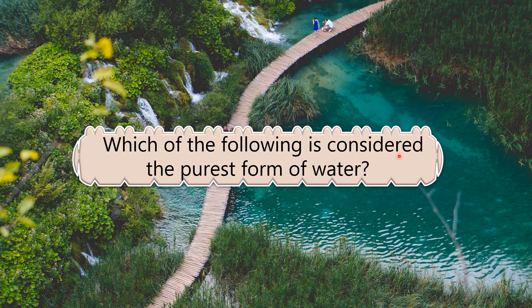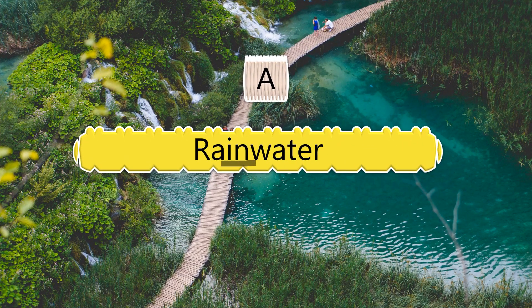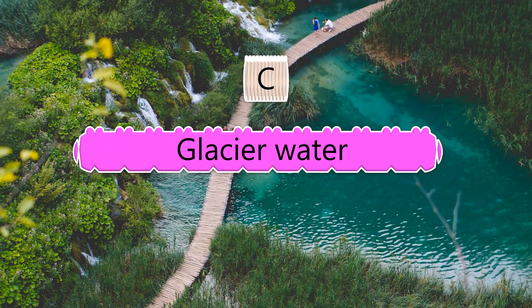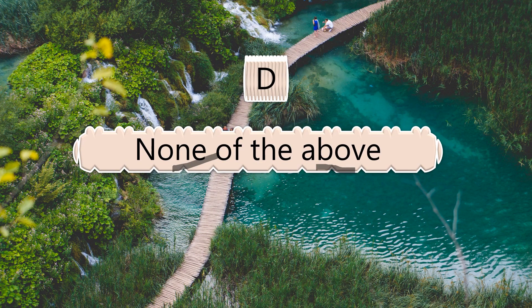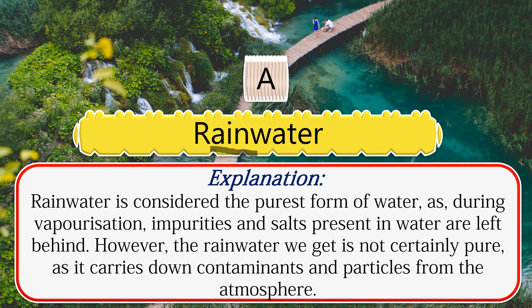Which of the following is considered the purest form of water? Options: rainwater, groundwater, glacier water, none of the above. The answer is rainwater. Rainwater is considered the purest form of water, as during vaporization impurities and salts present in water are left behind.